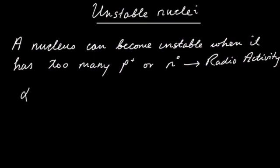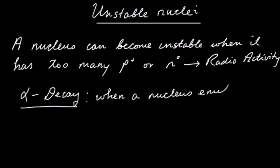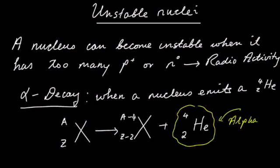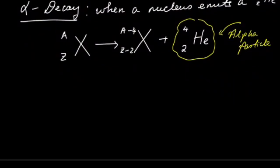There are a number of radioactive processes. Let's start with the alpha decay. Alpha decay is basically a result of a large nucleus emitting two of its protons and two of its neutrons, which is the same as a nucleus of a helium atom.